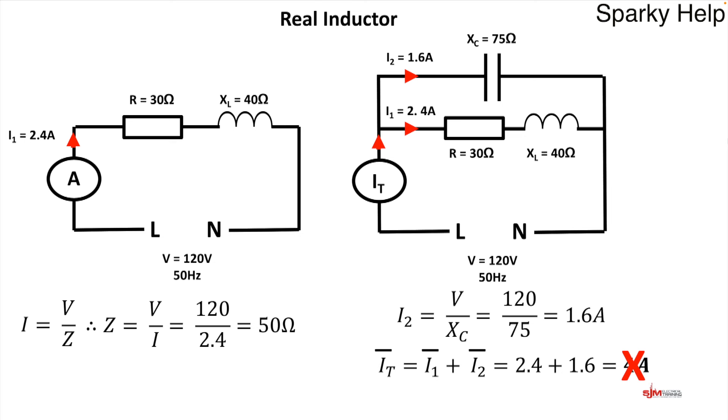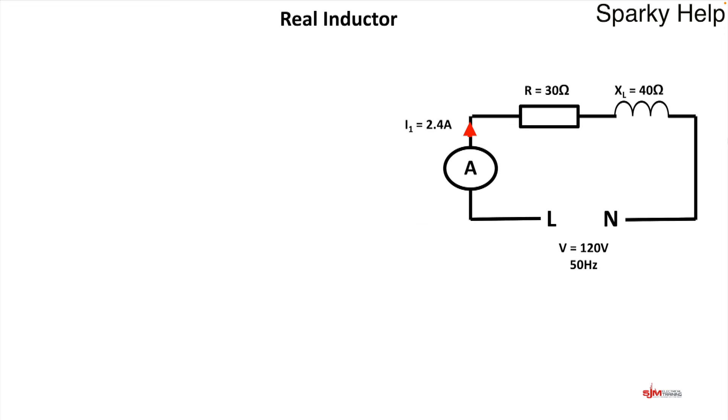As we see it there, it's the phasor addition of these. We have to allow for these that are out of phase with each other. So providing we add them up and take into the phase angle relationship between them, we could work out what the total current would be. So that's the bit we're going to focus on.